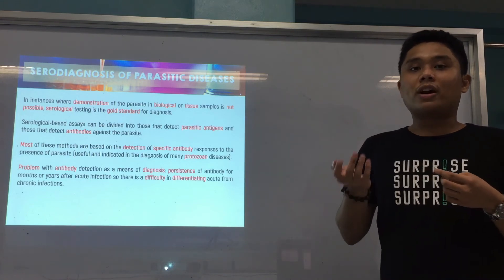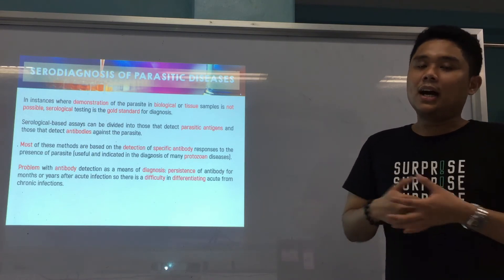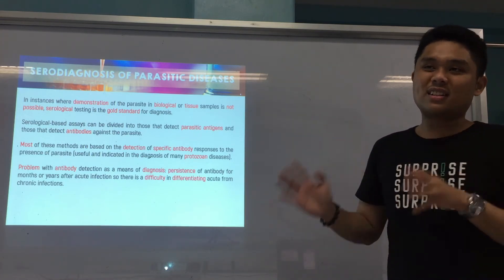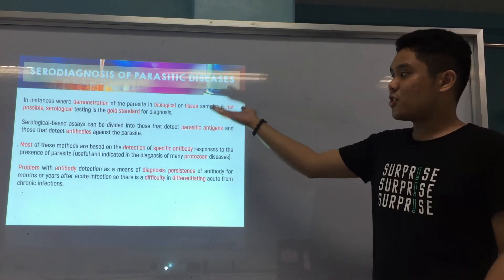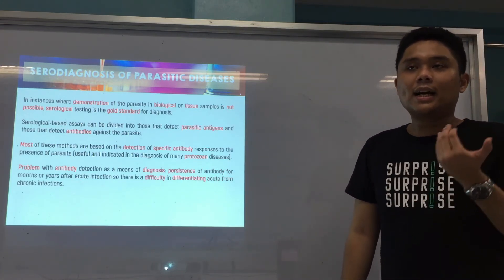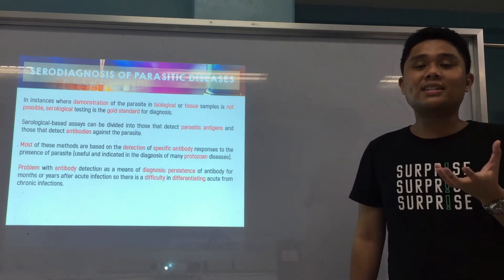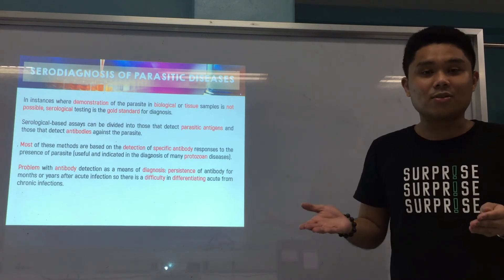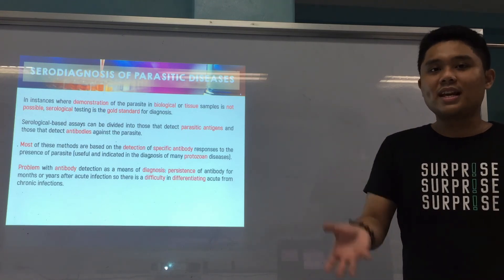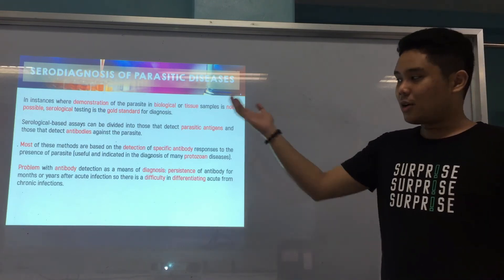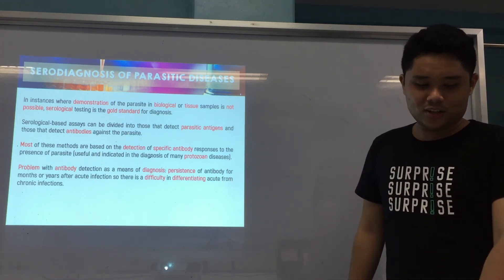When you say acute, it's the infection happening now; chronic is one that has been happening for a long period of time. There is difficulty if you're only looking for antibodies, because antibodies persist for a lifetime — for example IgG, which gives you immunity. You cannot easily say whether this is an acute or chronic infection based on antibody detection alone. You can differentiate through identification of the parasite in clinical samples — if you see parasite eggs, cysts, or trophozoites, you can say it's acute because it's happening now.